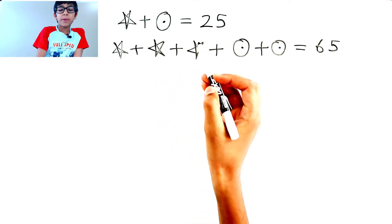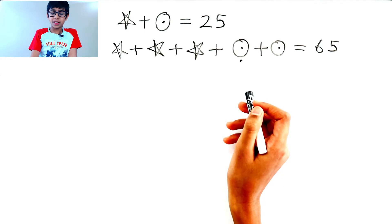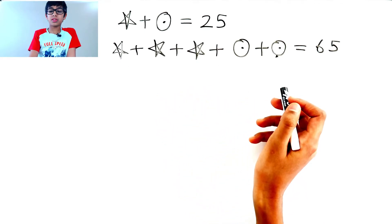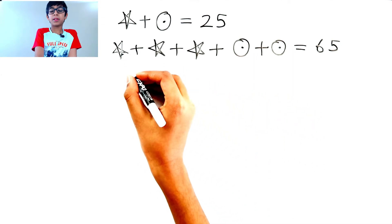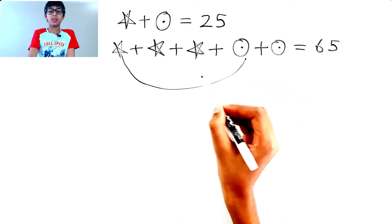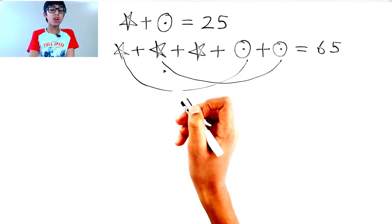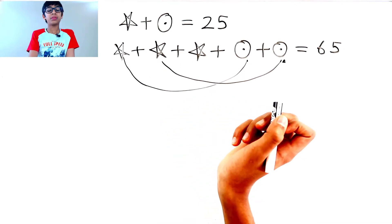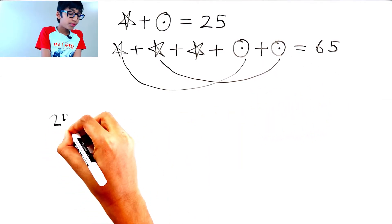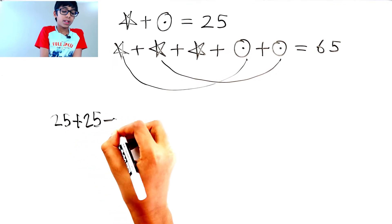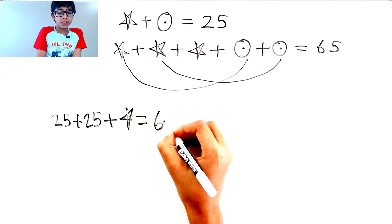So star plus circle equals 25. There's a star plus circle here, and a star plus circle here too. Star plus circle and star plus circle — let's group those. Instead of star plus circle, let's write 25, because star plus circle equals 25. So 25 plus 25 plus star equals 65.